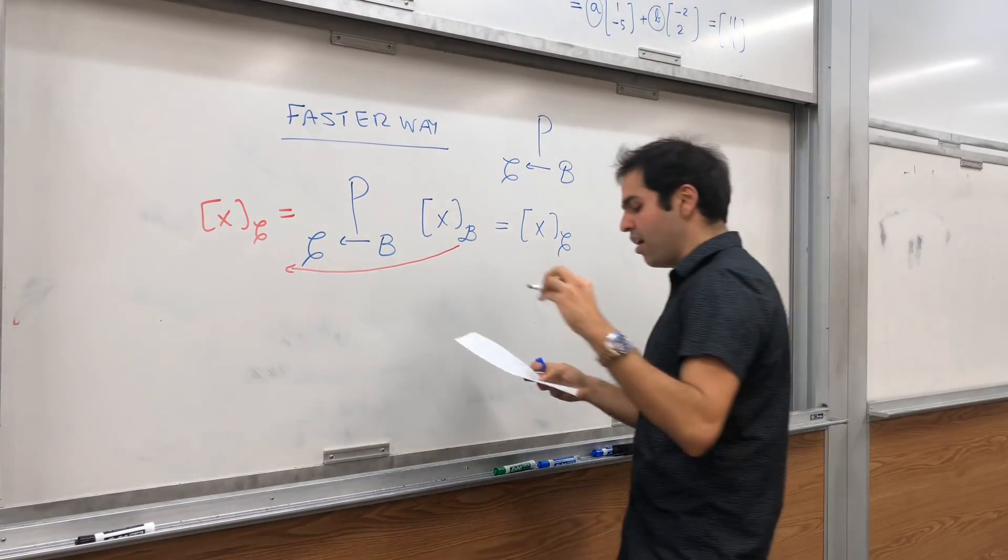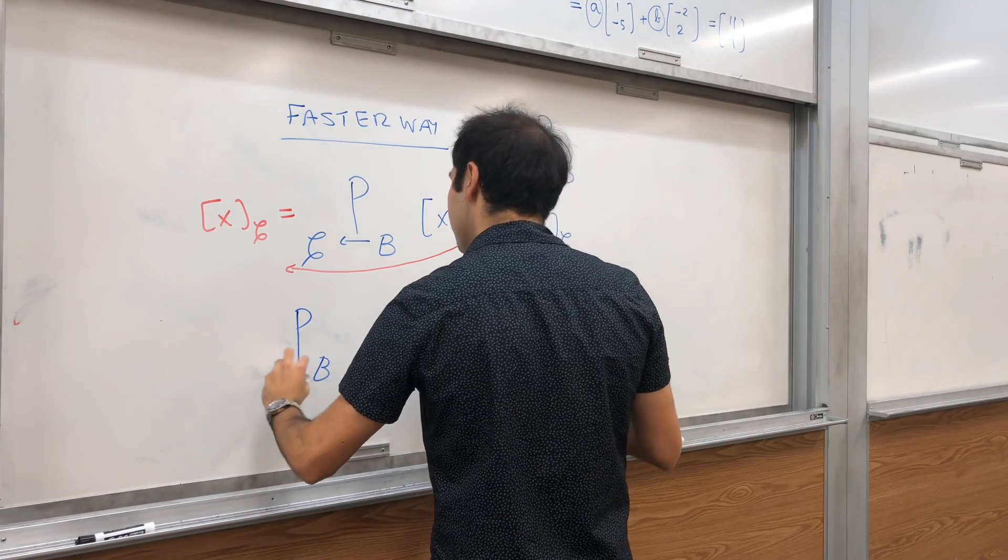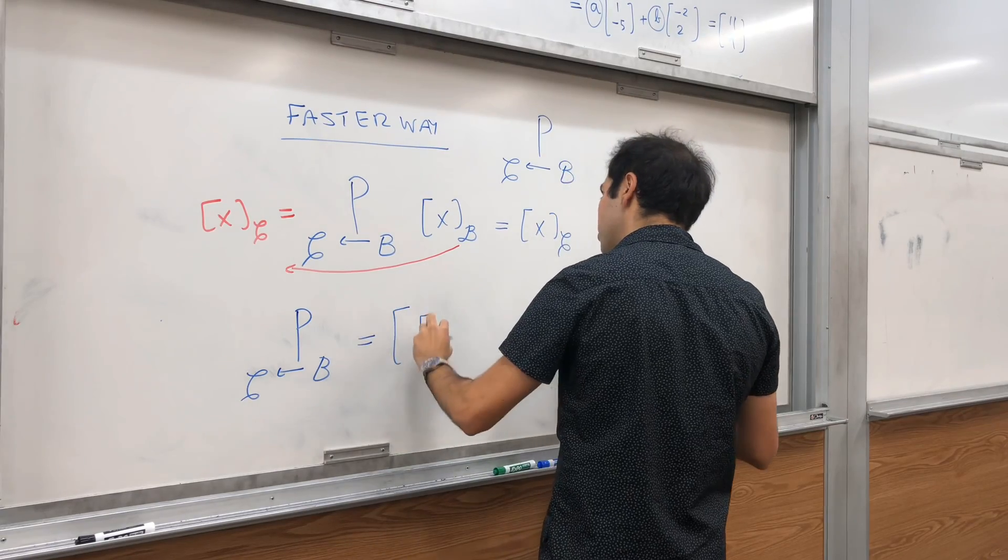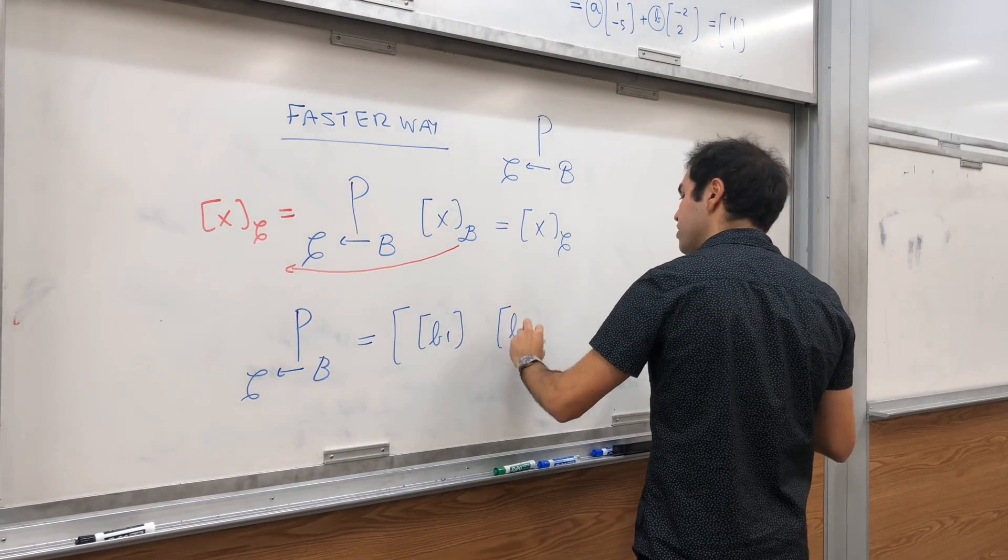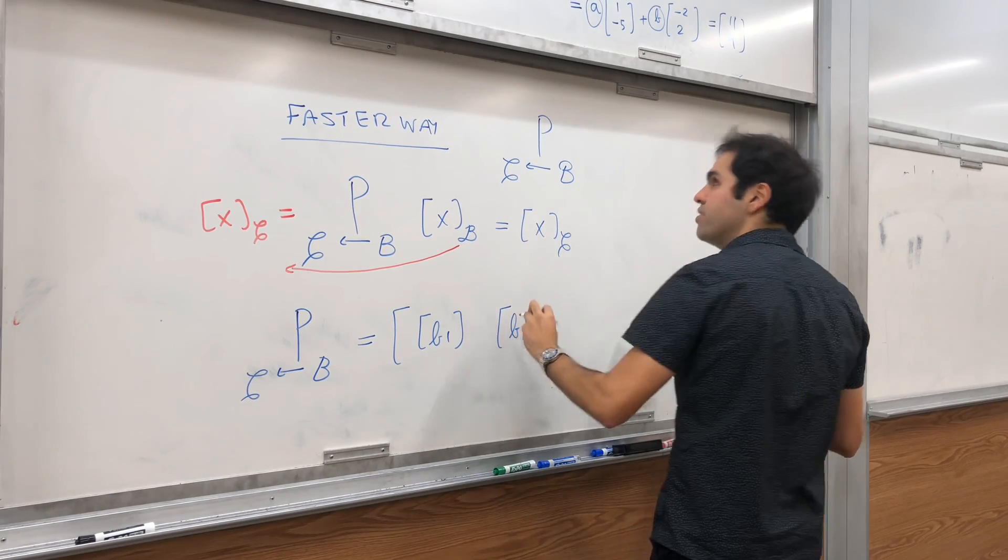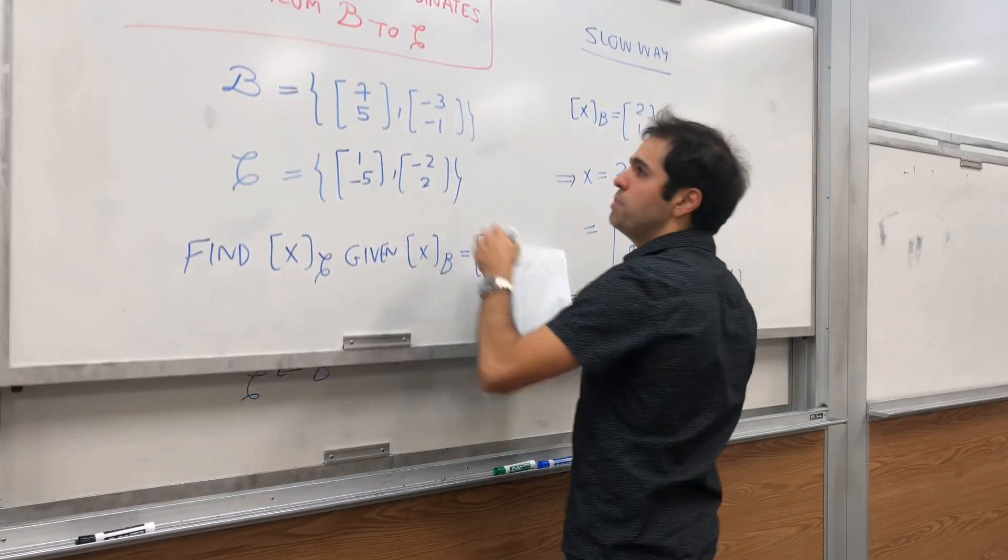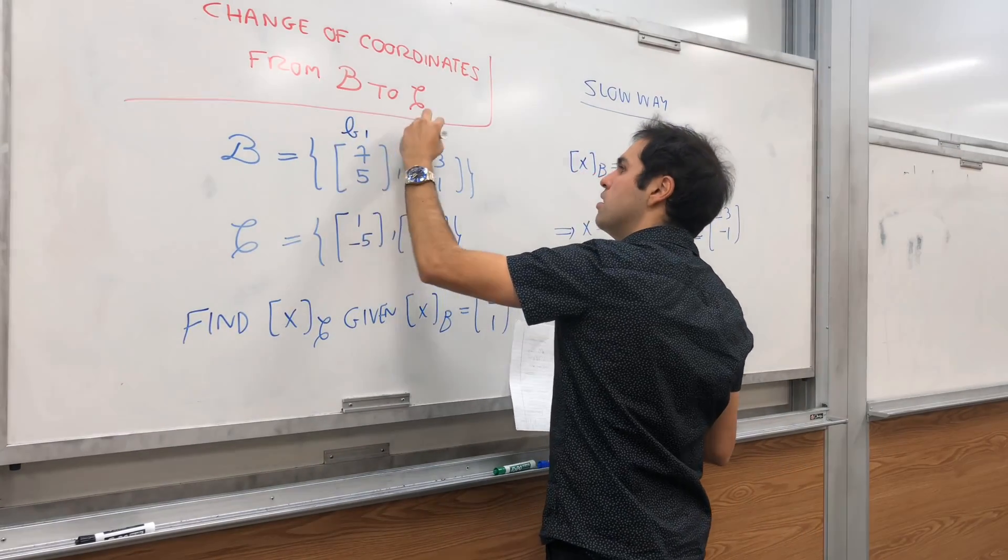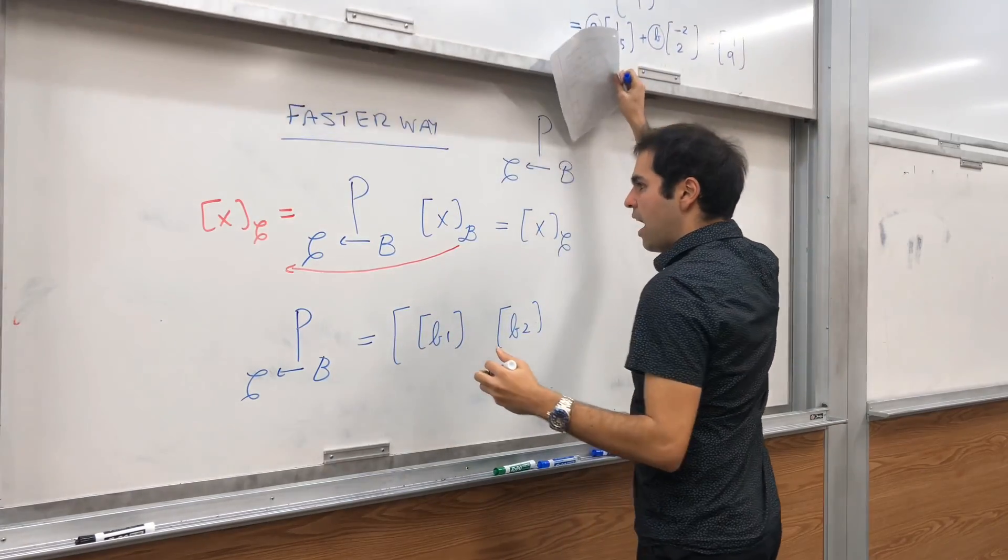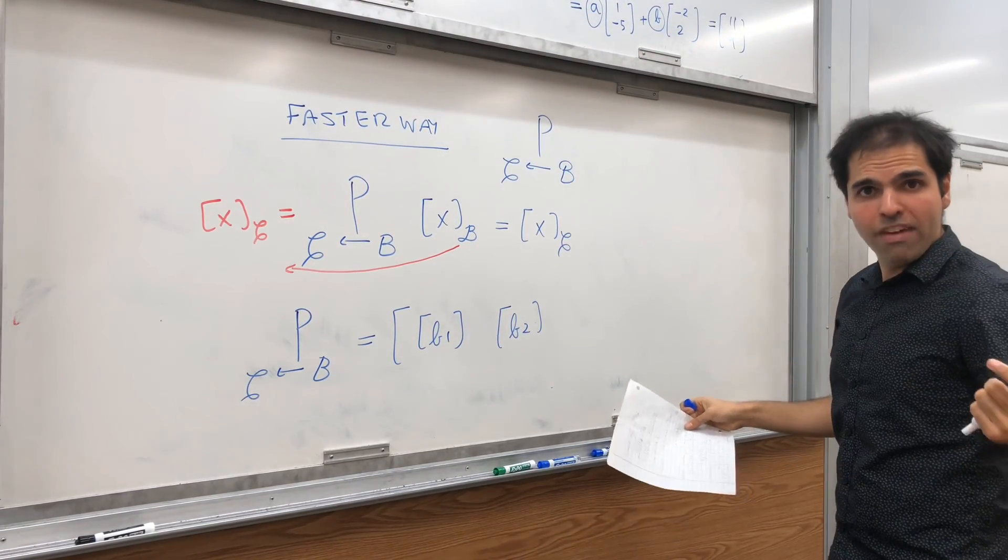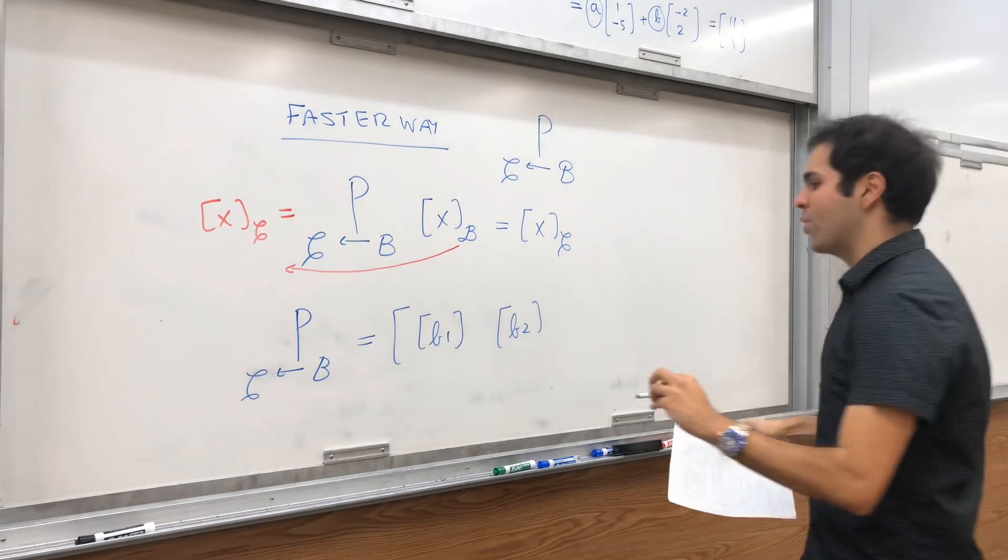Well, it's simply as follows. So, P, B to C, all you do is, you take your old vectors, so your vectors in the basis B, so this is, if you like, this is B1 and B2. And you take those old vectors, and you evaluate them with respect to the new coordinates.